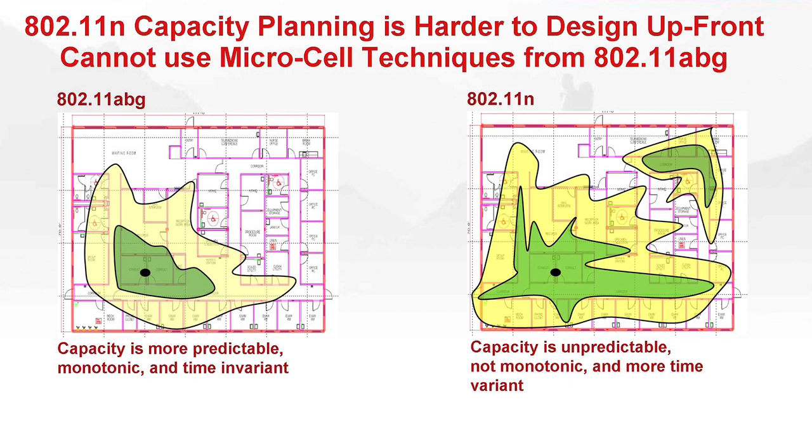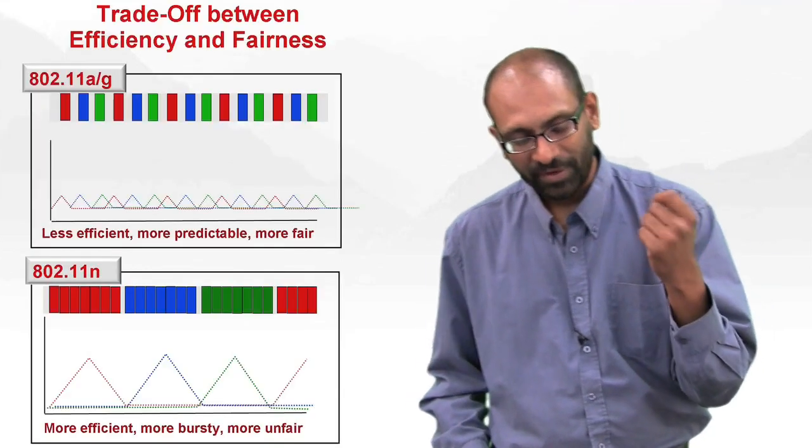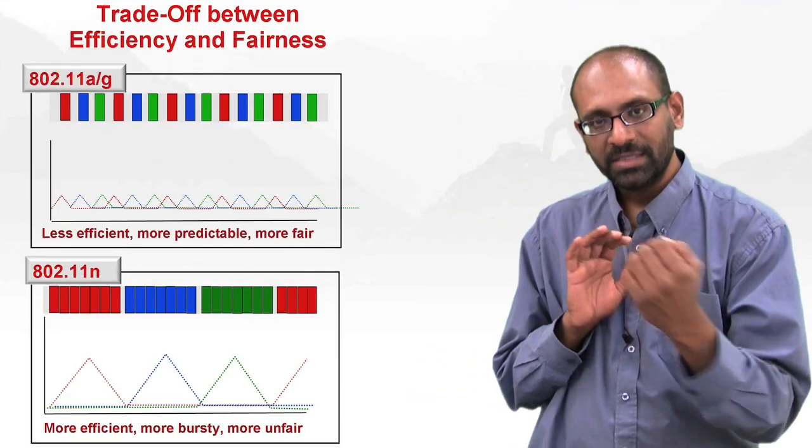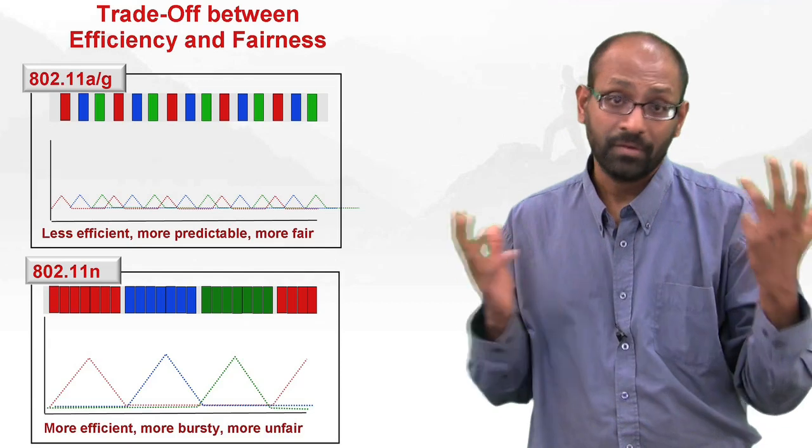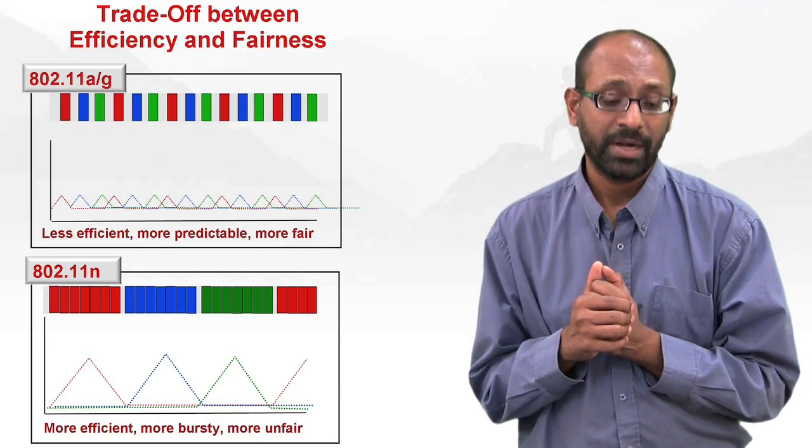So now let's move on to the next key point, which is, again, it's an implication of the burstiness. Notice that obviously there's a price to pay for every technique of advancement. 11n increases efficiency through burstiness, and therefore there are some tradeoffs.